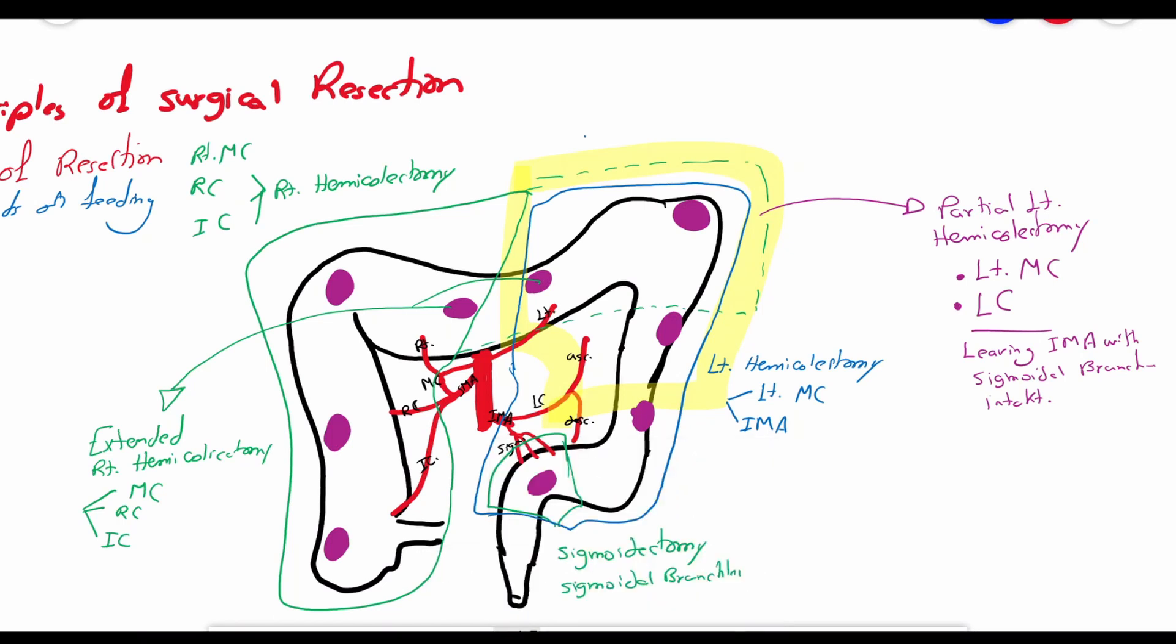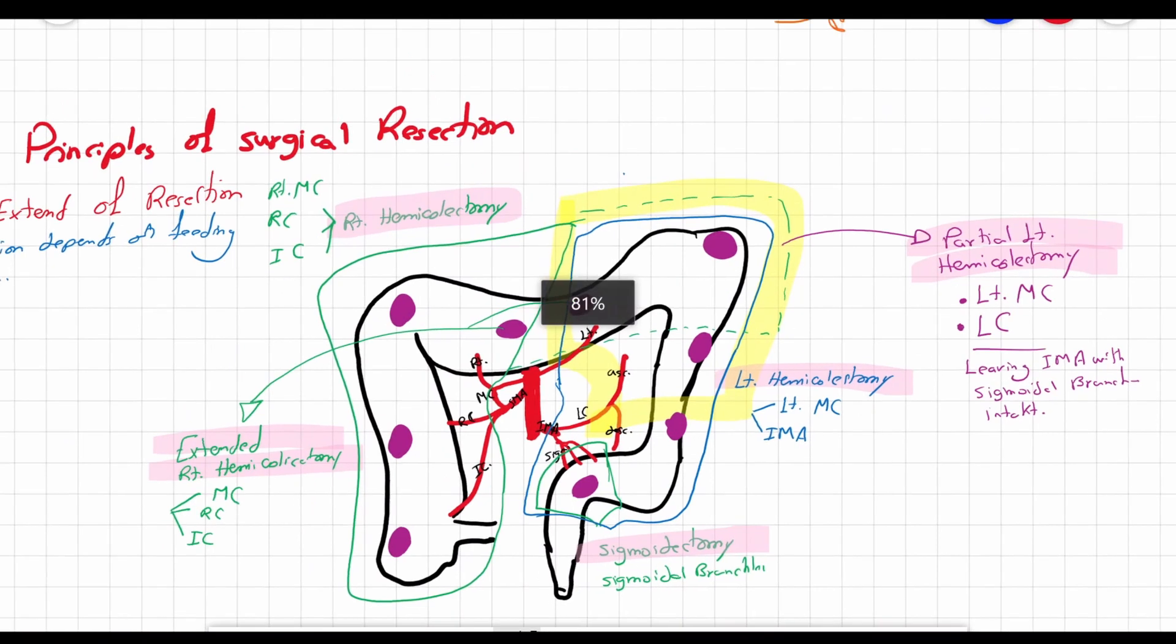To summarize, the five main procedures are the right hemicolectomy, the extended right hemicolectomy, sigmoidectomy, left hemicolectomy, and partial left hemicolectomy.